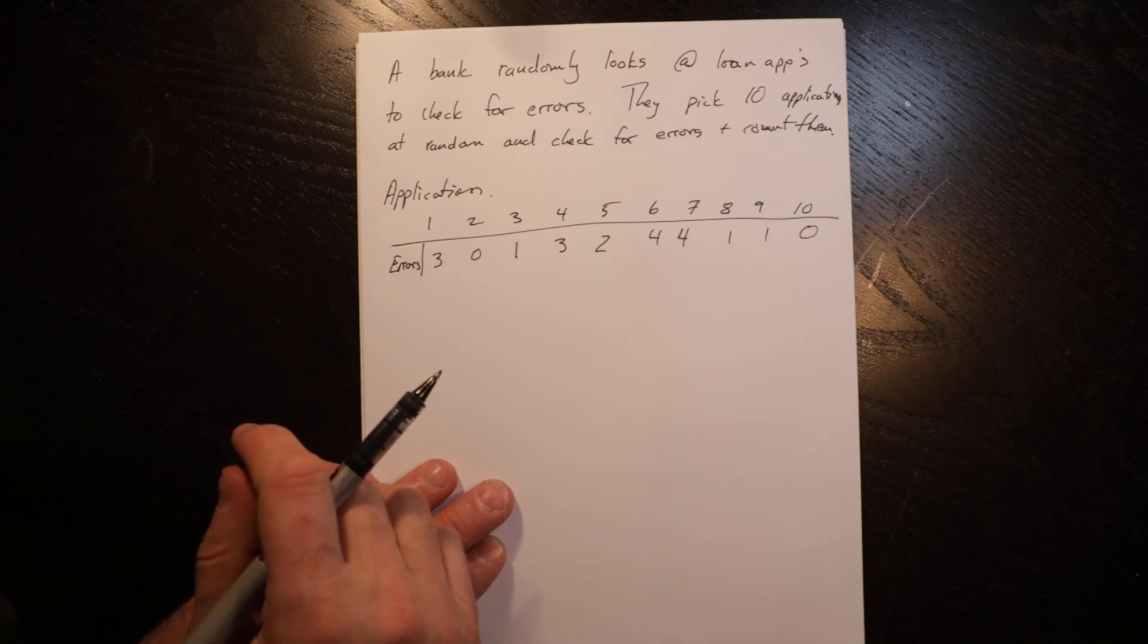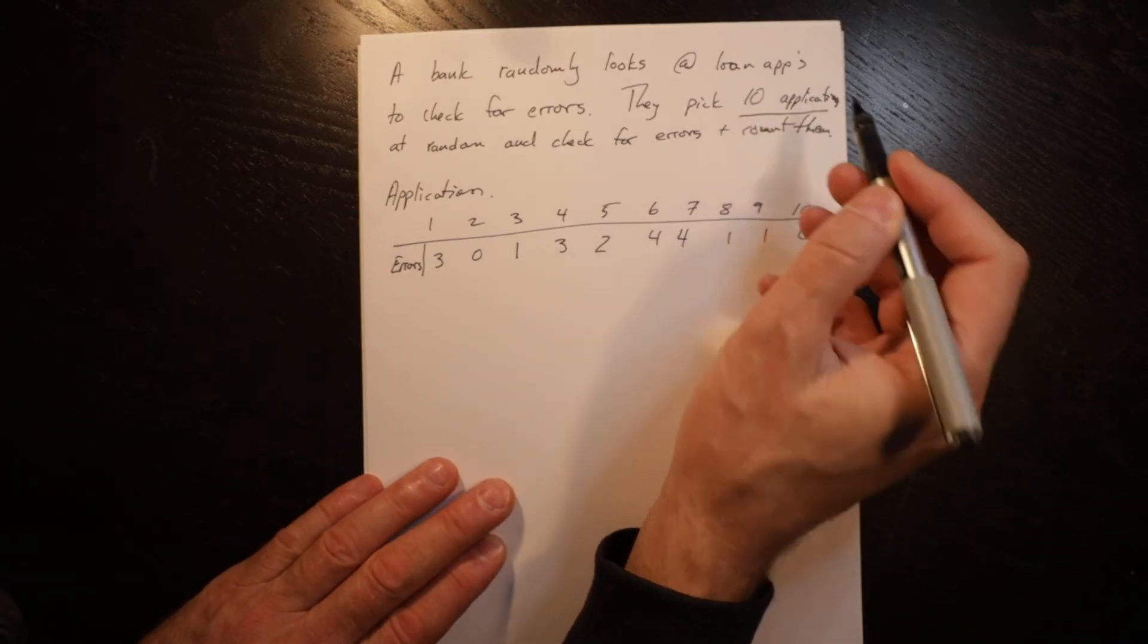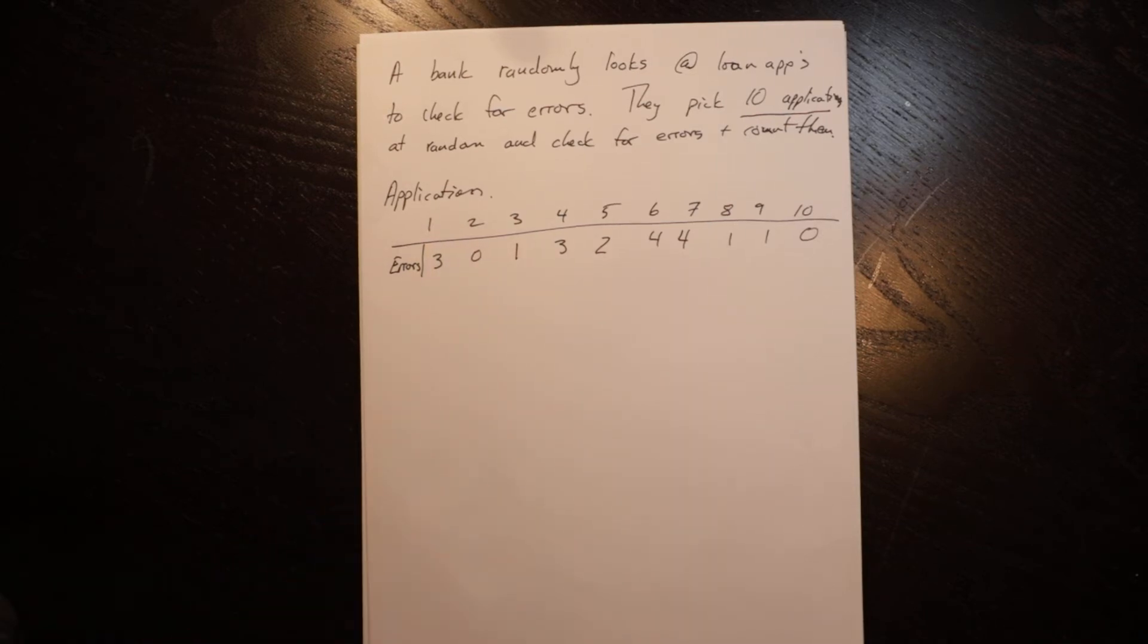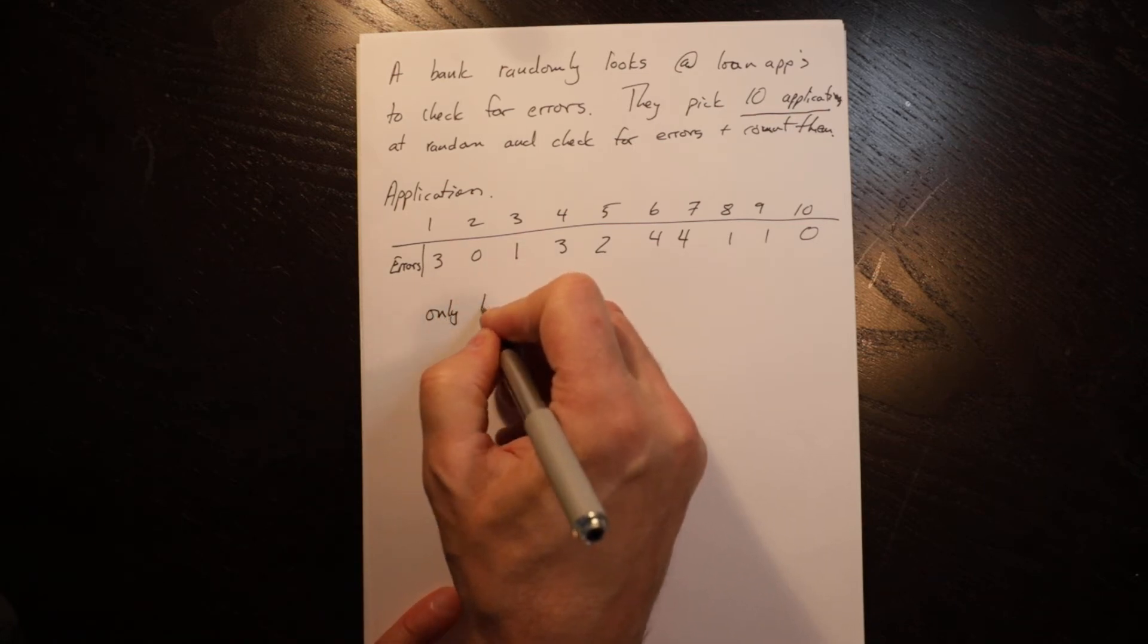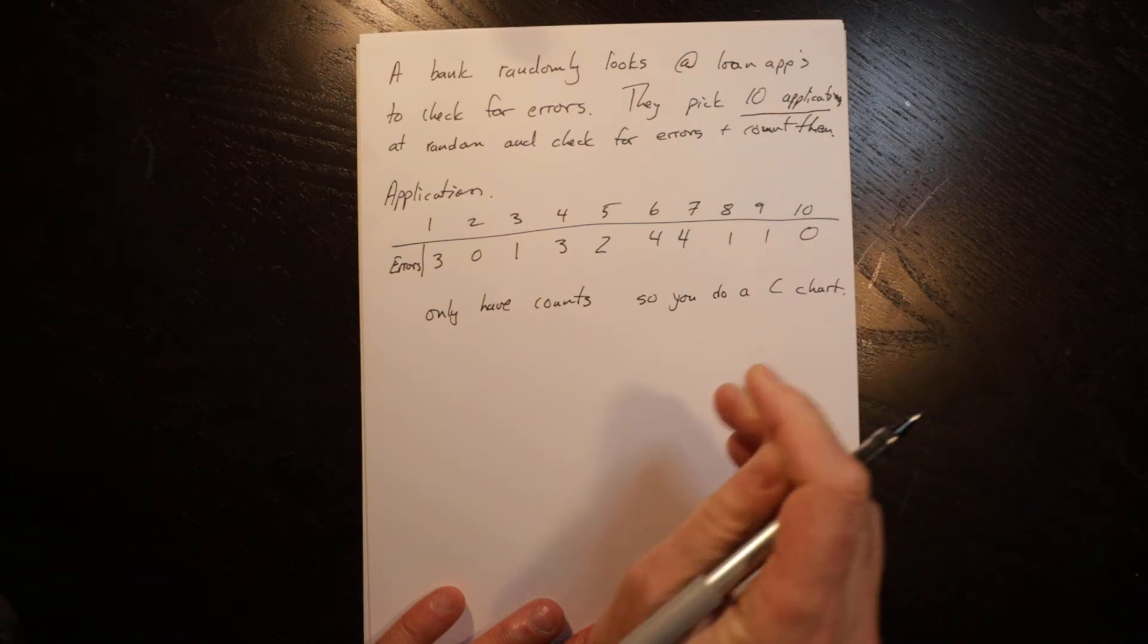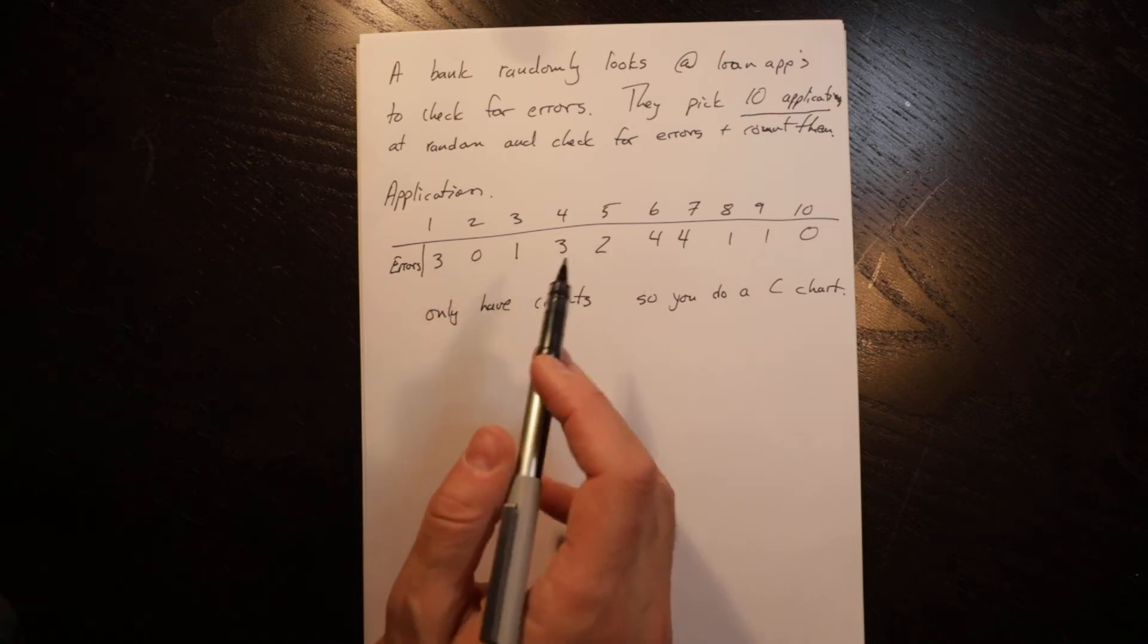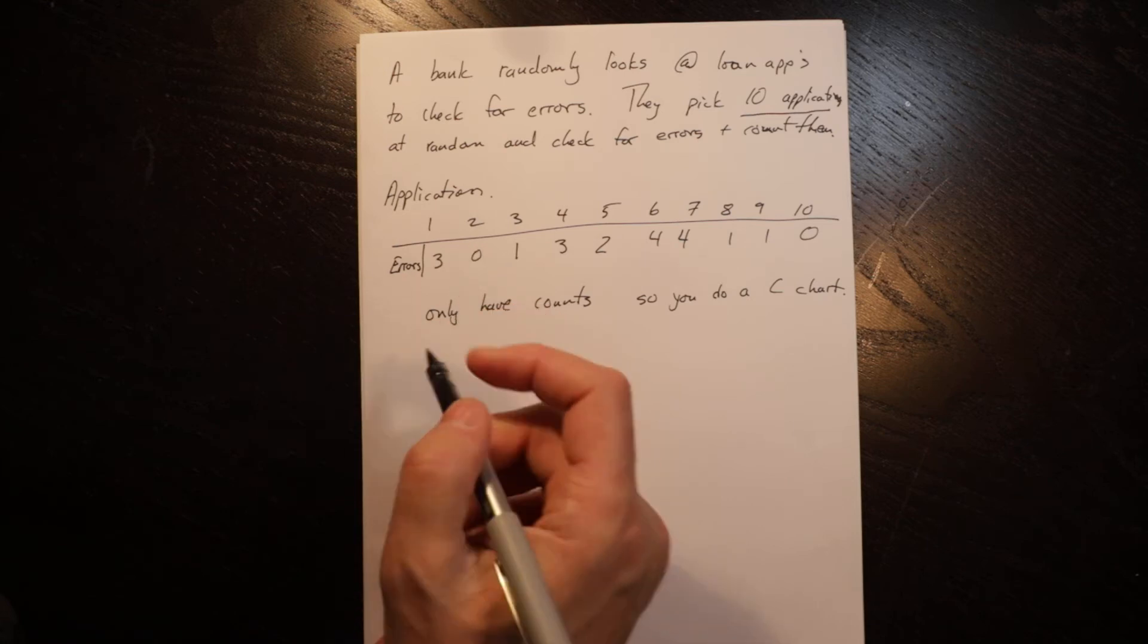So in this circumstance it's asking you to do a statistical process control chart for this bank looking at the number of errors in applications. You have 10 applications but that's a bit of a red herring because in each application you have different amounts of data. You only know how many things are done wrong. So in this circumstance you only have counts. So you do a c chart.